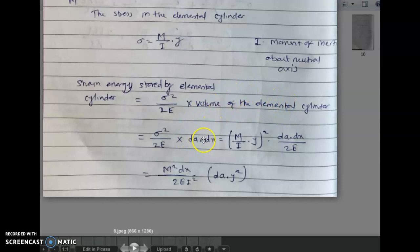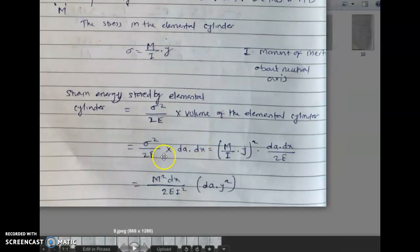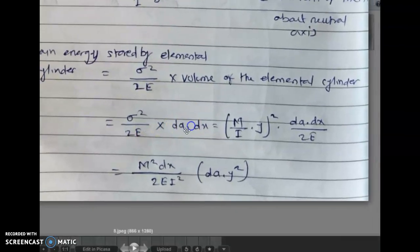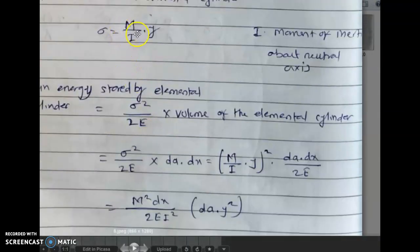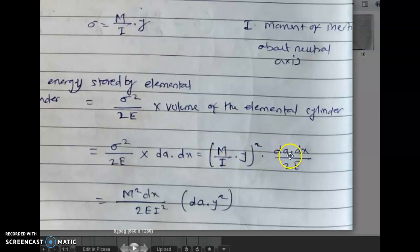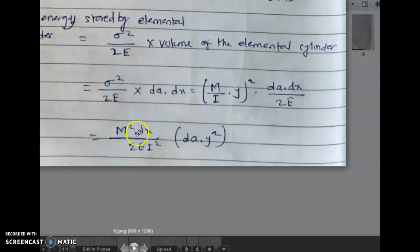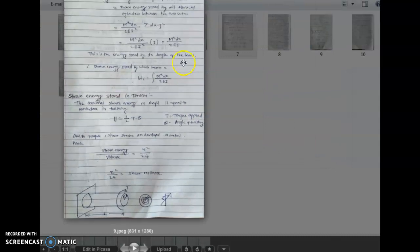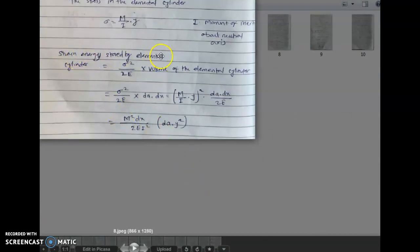The strain energy stored by an elementary cylinder equals sigma squared upon 2E into its volume. The volume of the elementary cylinder is dA into dx, where dA is the small elemental area. Substituting sigma equals M/I·y, we get (M/I·y) squared into dA·dx upon 2E. This becomes M squared·dx upon 2E·I squared, with the integral of y squared·dA being the moment of inertia by definition.